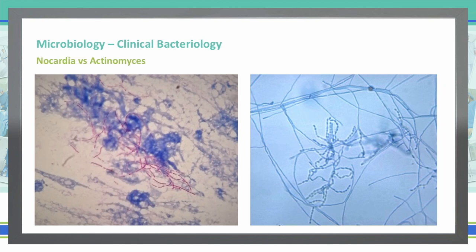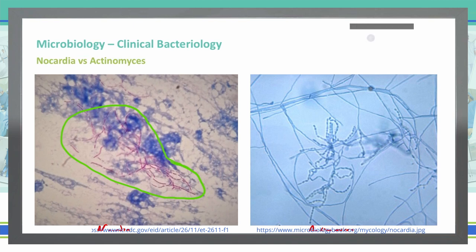What you're seeing here is a side-by-side representation of the two bacteria, Nocardia and Actinomyces. Nocardia is weakly acid-fast, so it stains red under an acid-fast stain — that's the one on the left. The one on the right is Actinomyces. You can see the red cells stained weakly acid-fast versus the non-acid-fast Actinomyces.